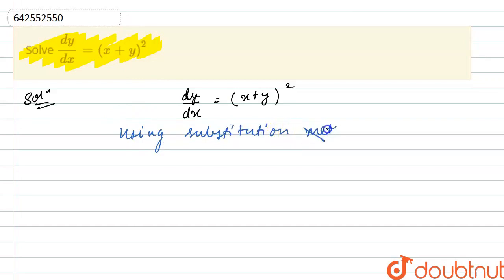What I will do here is put x plus y equals v. Now, differentiate both sides with respect to x. So, this will become 1 plus dy/dx equals dv/dx.